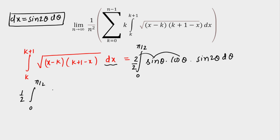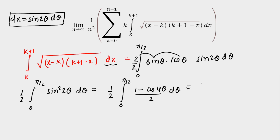We have (1/2) · ∫₀^{π/2} sin²(2θ) dθ. Converting sin²(2θ) using the identity: sin²(2θ) = (1 − cos 4θ)/2. So the integral becomes (1/4) ∫₀^{π/2} (1 − cos 4θ) dθ. Integrating: (1/4)[θ − sin(4θ)/4] from 0 to π/2.